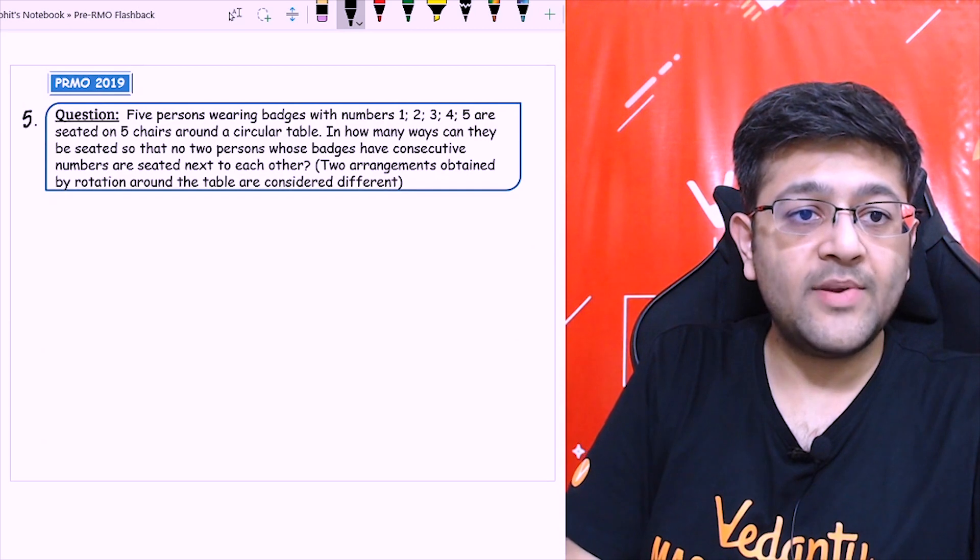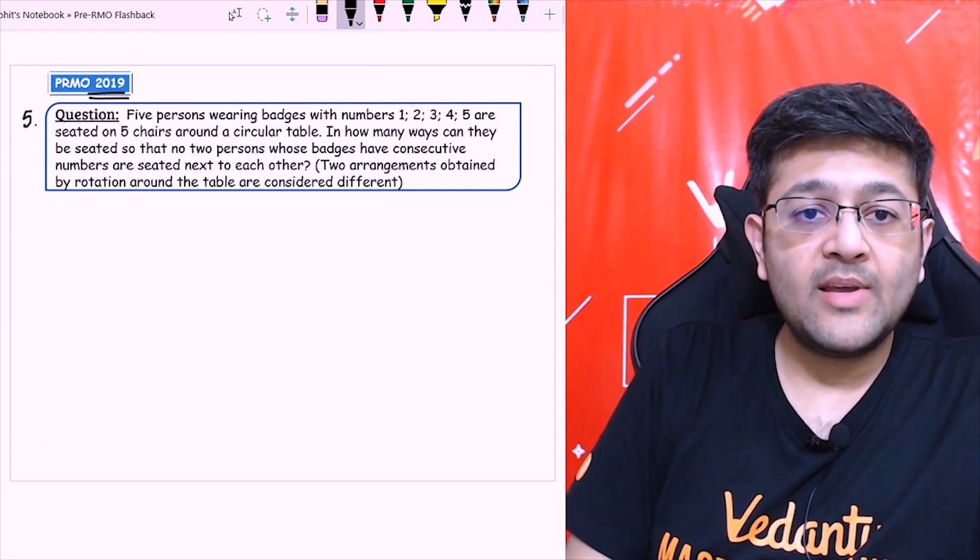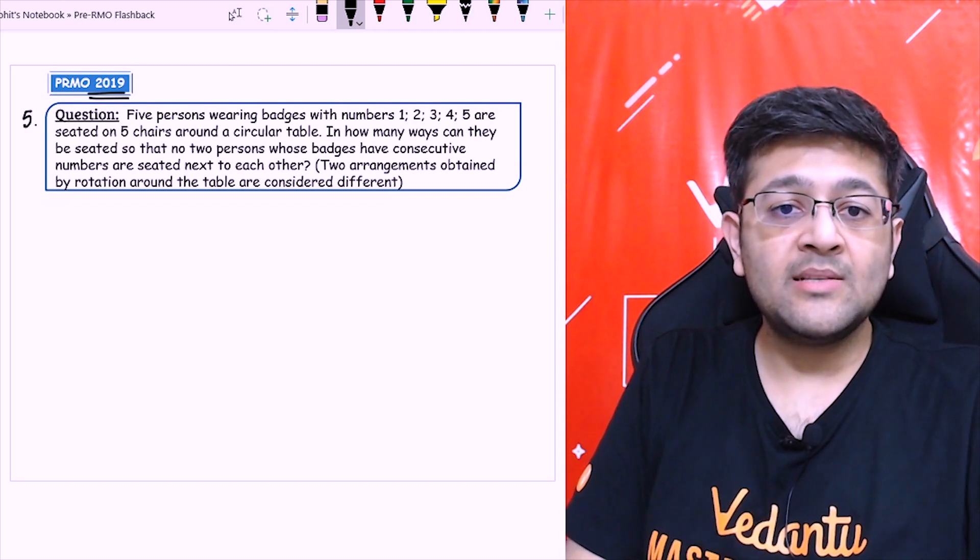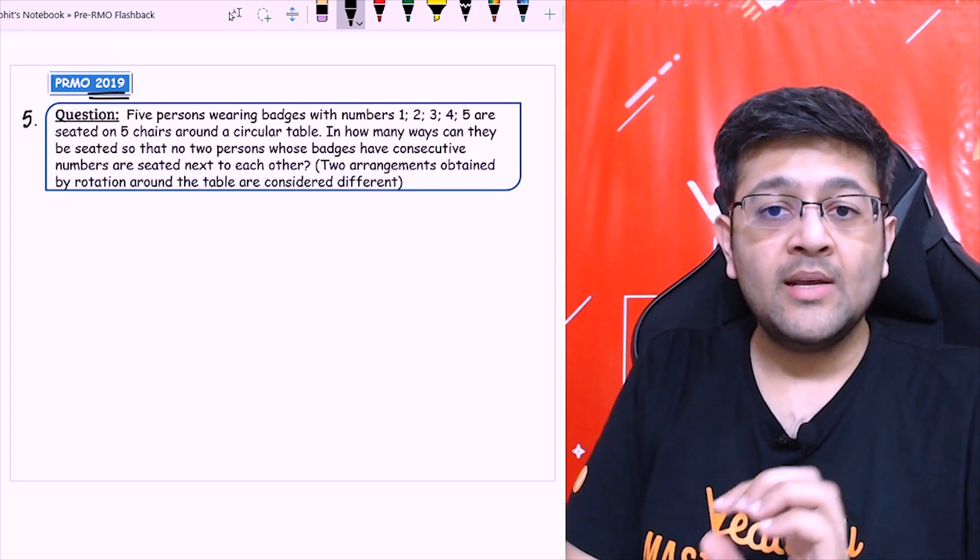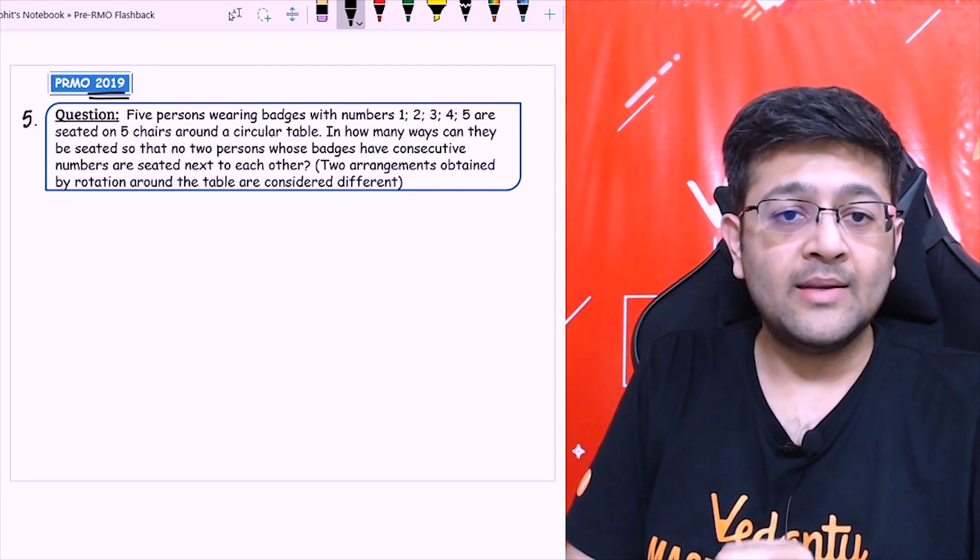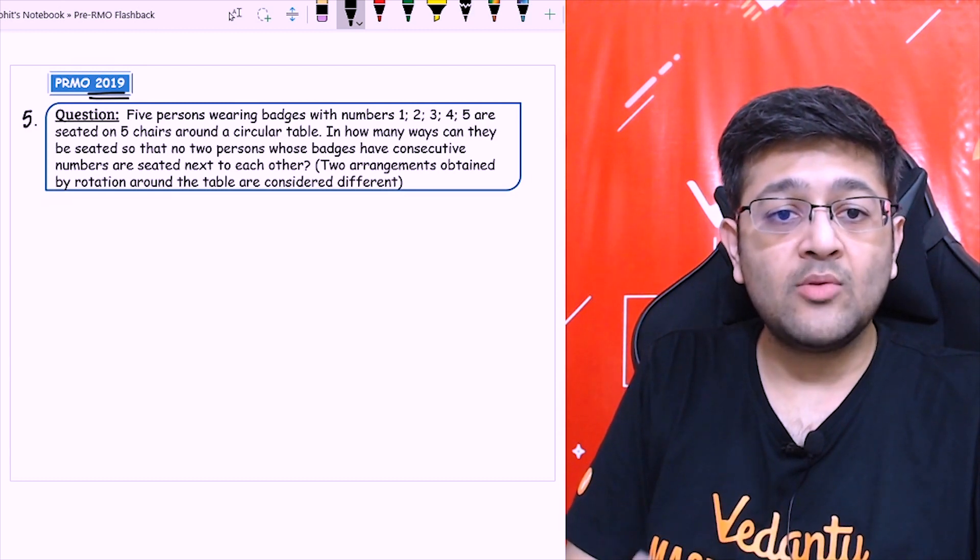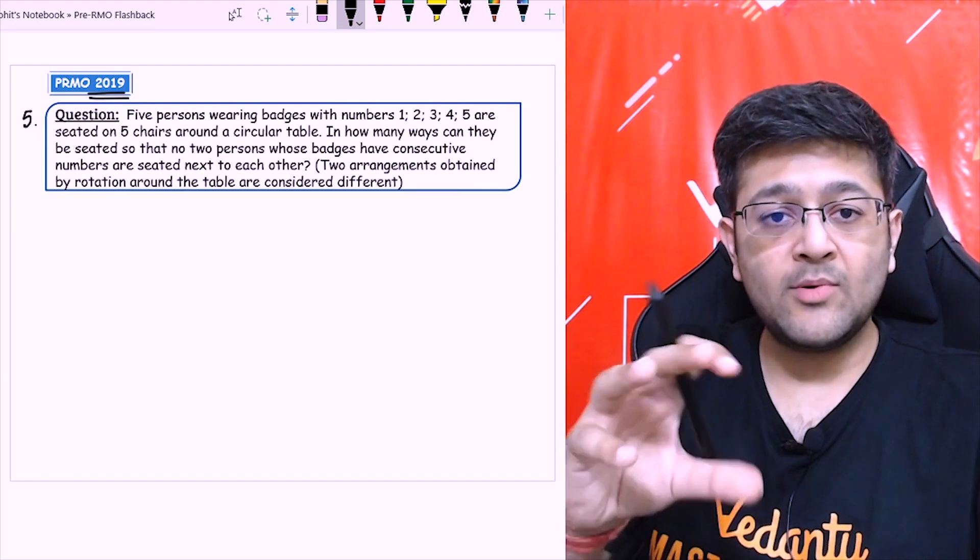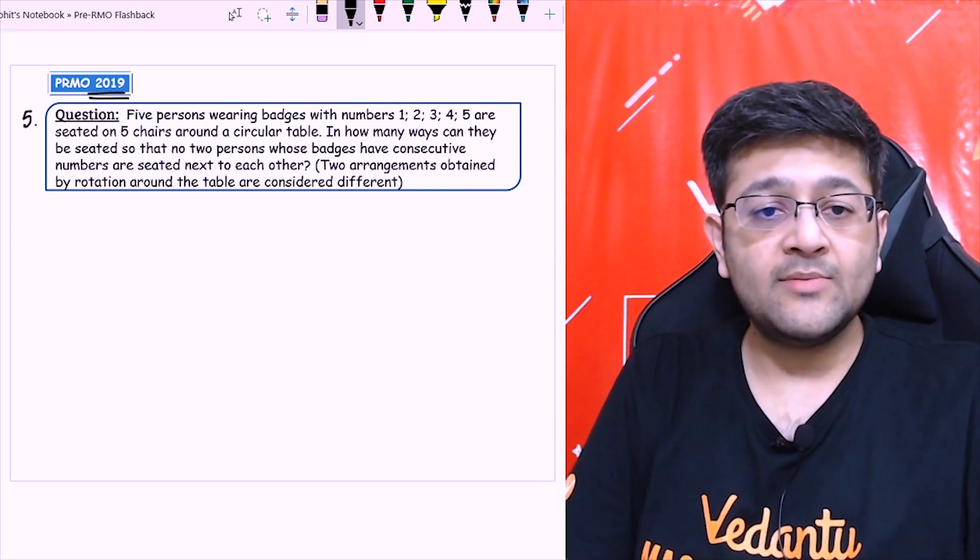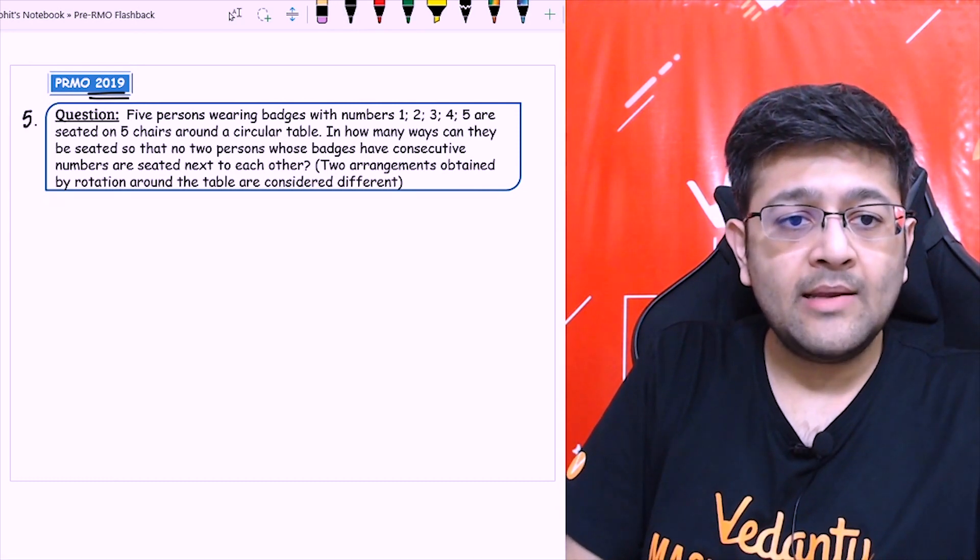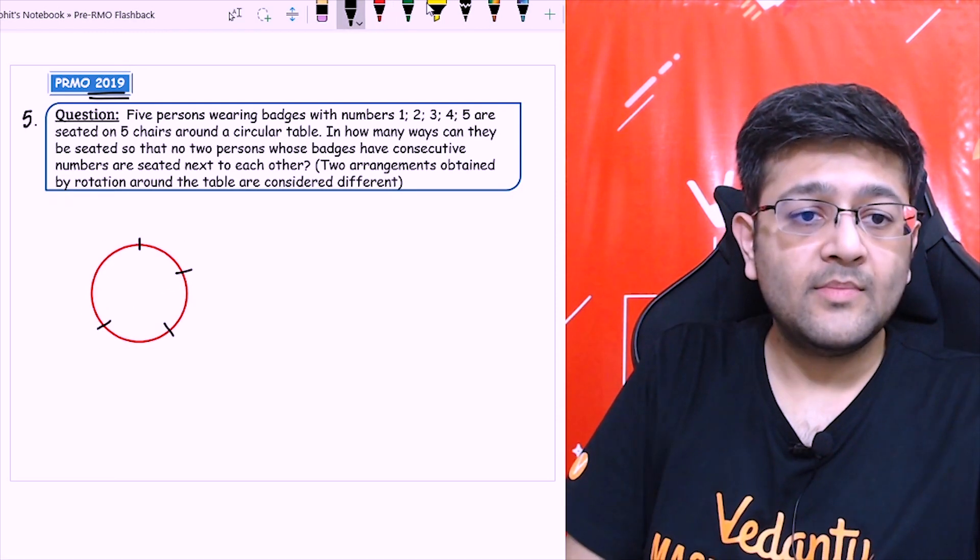This is the fifth question of Pre-RMO 2019. Let's read it. Five persons wearing badges with numbers 1, 2, 3, 4, 5 are seated on 5 chairs around a circular table. In how many ways can they be seated so that no two persons whose badges have consecutive numbers are seated next to each other. Let's draw a circle first of all. Let's say this is a round table, these are the five seats.